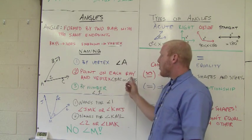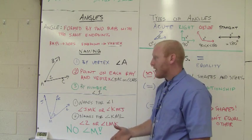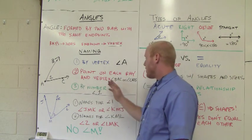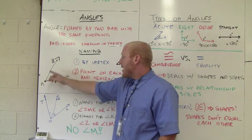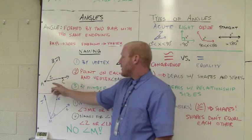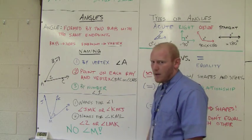Or I can name it by a point on each ray and vertex. That's basically wrapping around the vertex. So I could say angle BAC or angle CAB. Those are the ways it's named by a point on each ray and vertex.